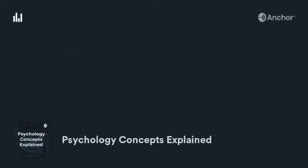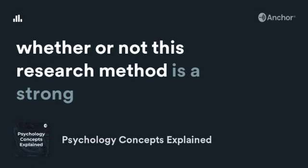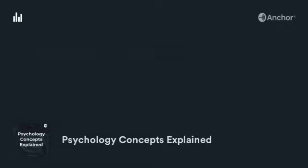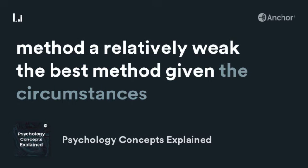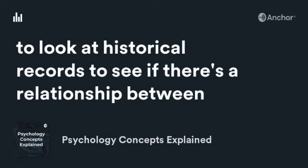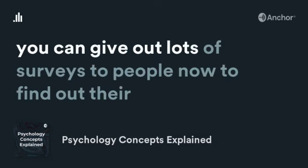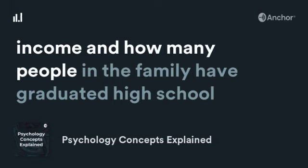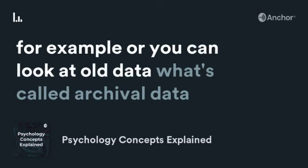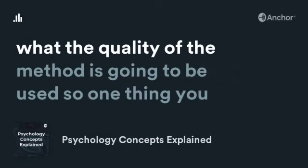When a psychologist does research, they know ahead of time when planning their study whether this research method is a strong method, a relatively weak method, or the best method given the circumstances of what they want to study. For example, a psychologist may want to look at historical records to see if there's a relationship between household income and graduation rates. There are many ways to study that — you can give out surveys to find out people's income and graduation rates, or you can look at archival data that might be publicly available from 50 years ago and still do the same kind of research.